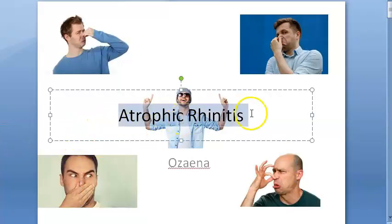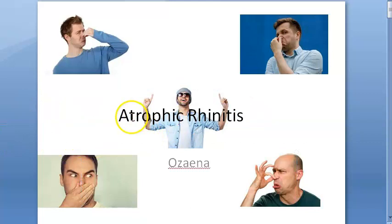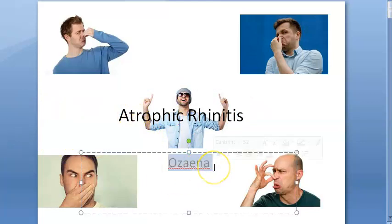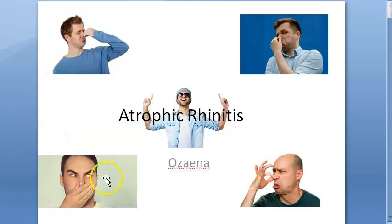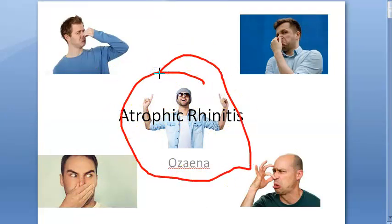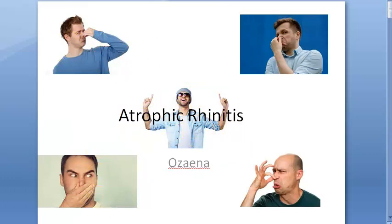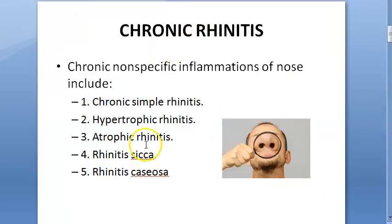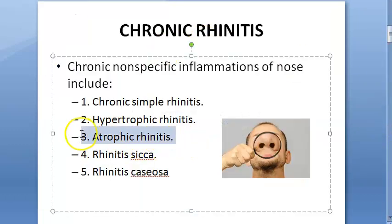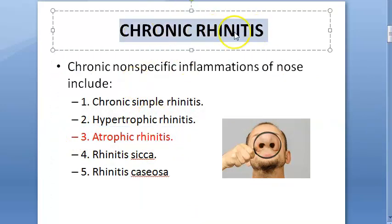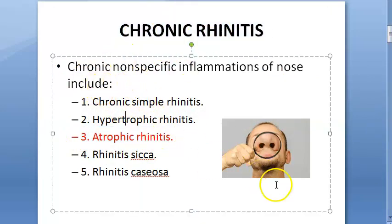In this video, let's look at atrophic rhinitis, also called ozena — based on the organism Klebsiella ozena that causes it. This condition is characterized by very smelly crusts. The person who has it doesn't realize the smell, but everybody around them does. This is called merciful anosmia. Atrophic rhinitis is a chronic condition, falling under chronic rhinitis.